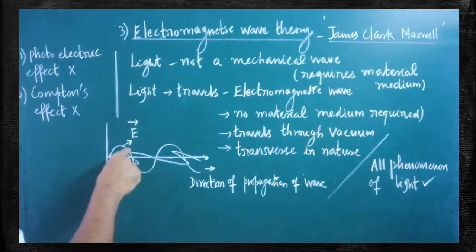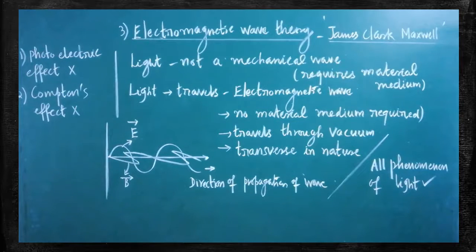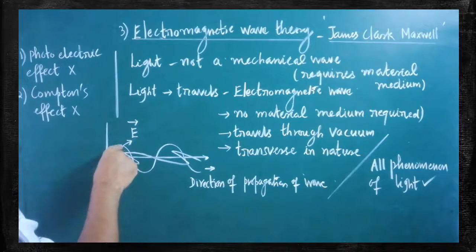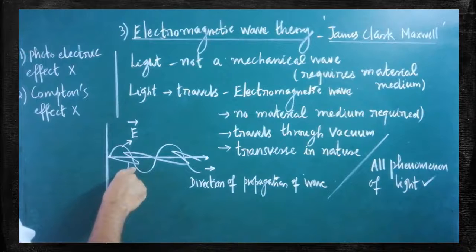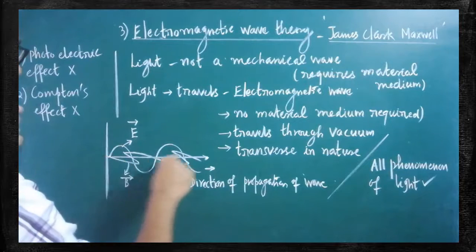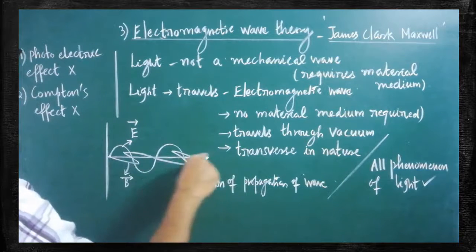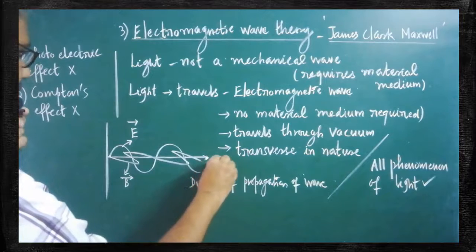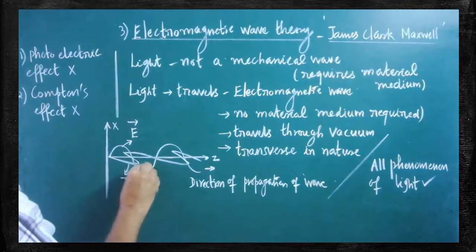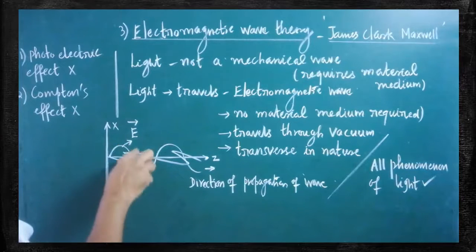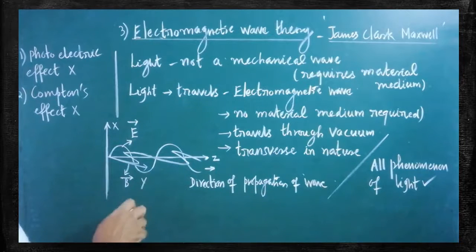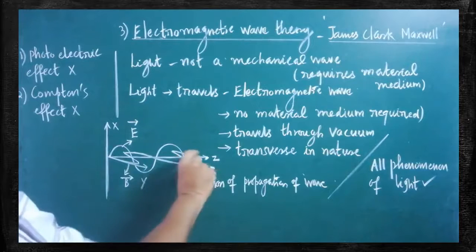Light possesses two vectorial formats. When light travels, the electric field vector and magnetic field vector are perpendicular to each other. The light propagates along the Z direction, the electric vector is along the X axis, and the magnetic vector is along the Y axis. So the electric vector, magnetic vector, and direction of propagation of the wave — all three are mutually perpendicular to each other. In this form, light travels.